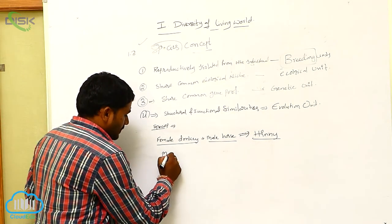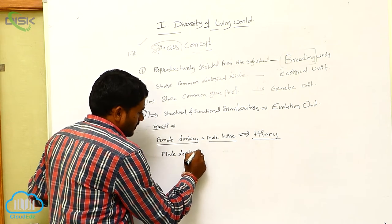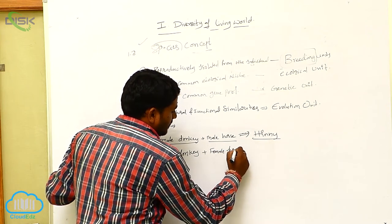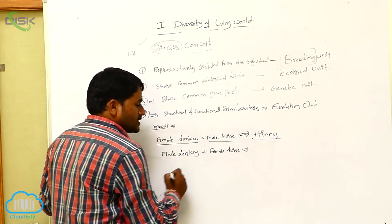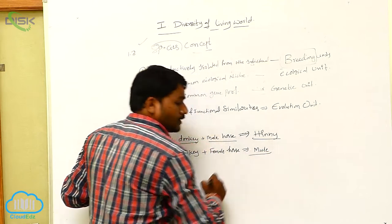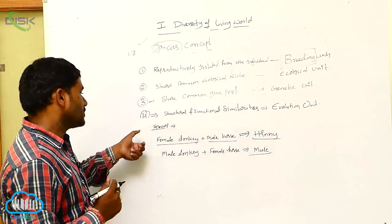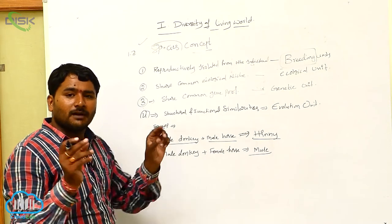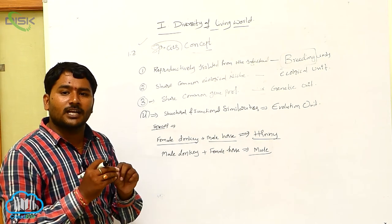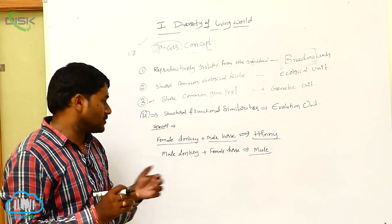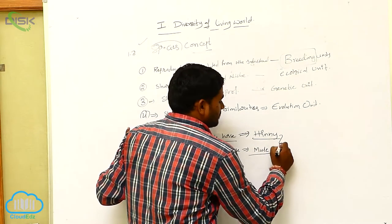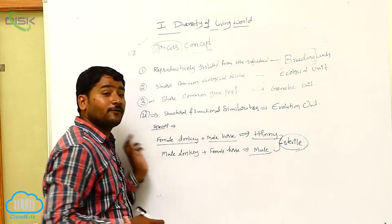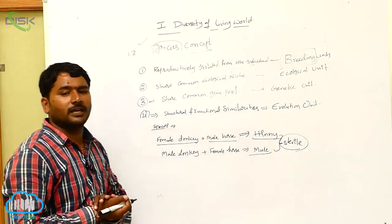Next, male donkey plus female horse produces Mule. These are sibling species — some closely related individuals undergo breeding and produce sterile offspring. Both are sterile, not fertile. Hinny is infertile, and Mule is infertile.